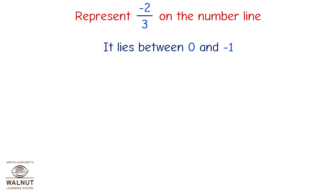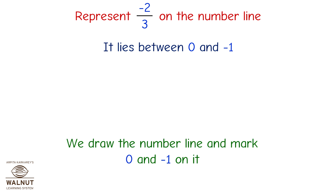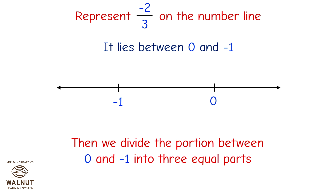Represent –2 upon 3 on the number line. It lies between 0 and –1. We draw the number line and mark 0 and –1 on it. Then we divide the portion between 0 and –1 into three equal parts: –1 upon 3 and –2 upon 3.